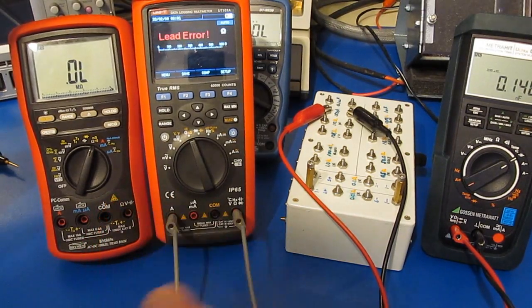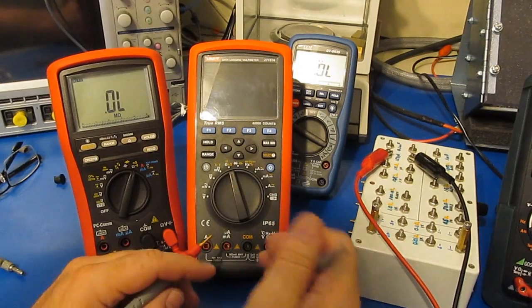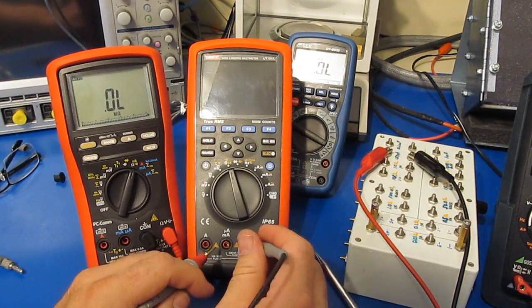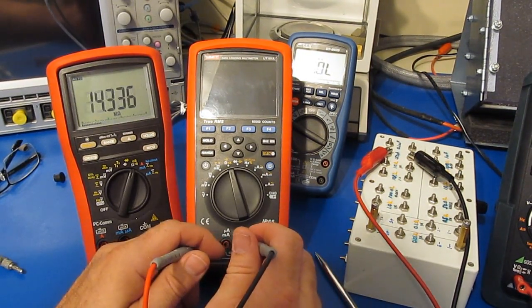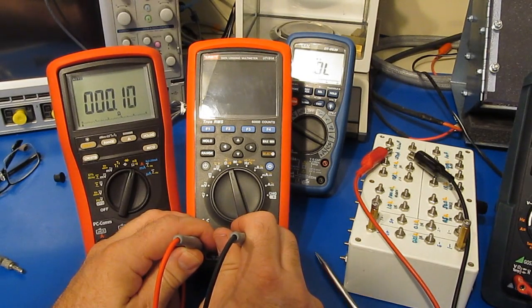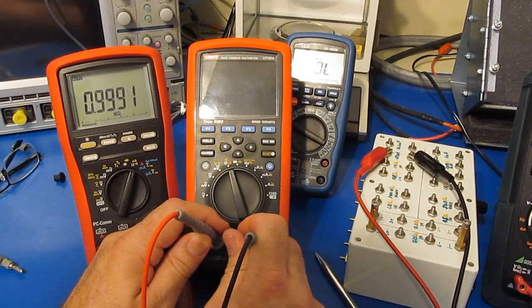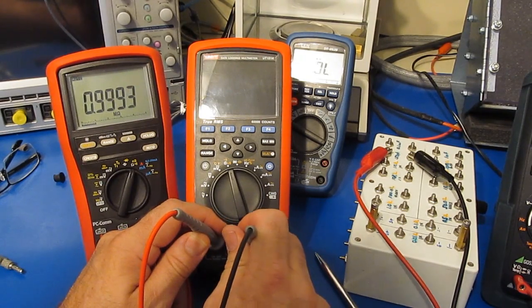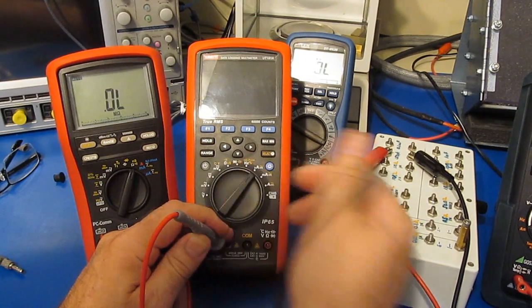Another way to check it is just to use a second meter. So if I just check the resistance between the common and the amps jack, you can see we're basically reading the resistance of the shunt. I can do the same thing with the low current input. You can see the problem with this is it actually has to be selected.